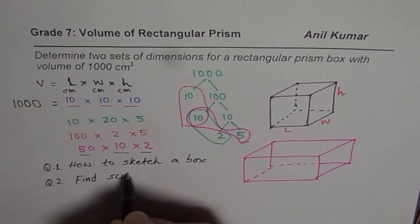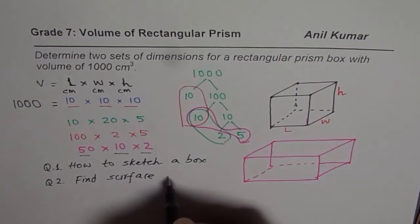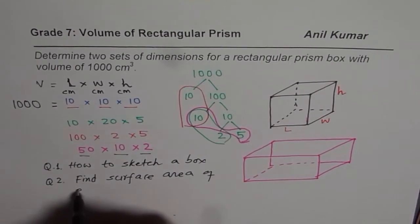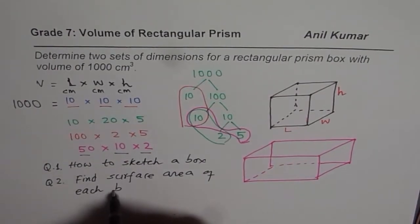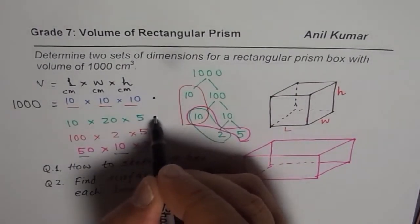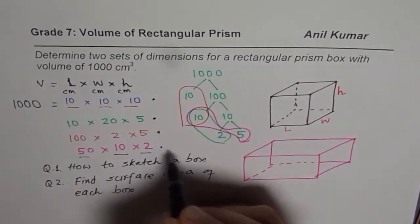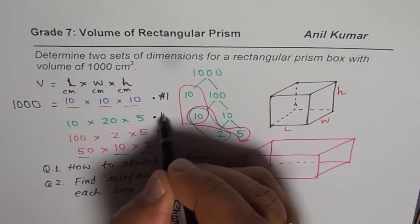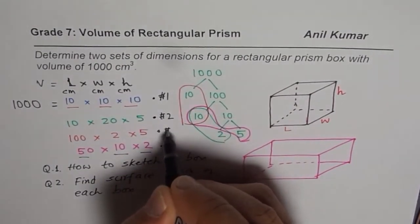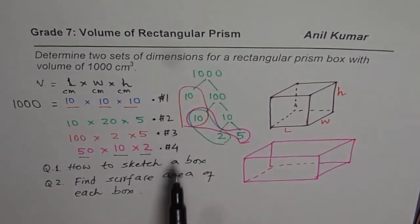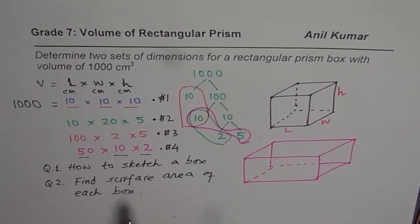Find surface area of each box. Now, when I say each box, it means what? We've got these three dimensions for so many different types of boxes. It is box number 1. Let's call this as box number 1. This is box number 2. Box number 3. And that is box number 4 for us. So your exercise is to find surface area for each box. I hope you remember the formula for surface area.